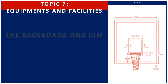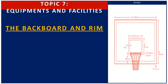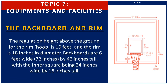For the backboard and rim: the regulation height of the rim or hoop above the ground is 10 feet, and the rim is 18 inches in diameter. Backboards are 6 feet wide (72 inches) by 42 inches tall, with the inner square being 24 inches wide by 18 inches tall.